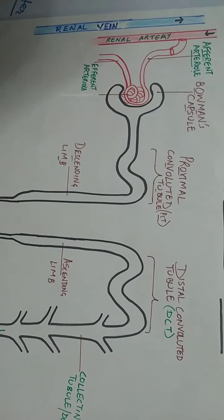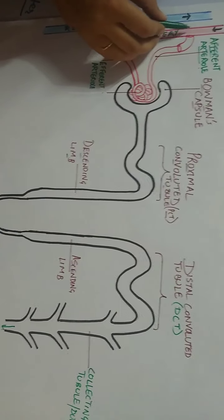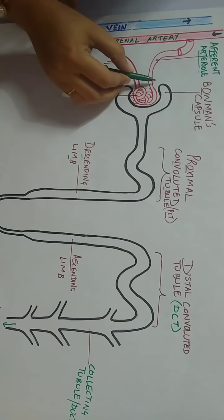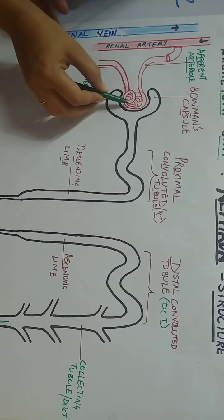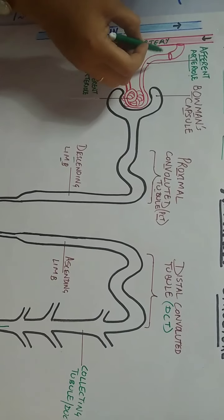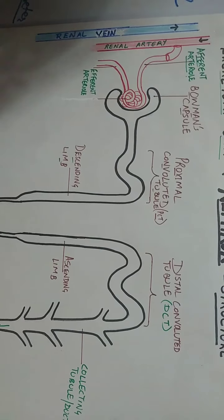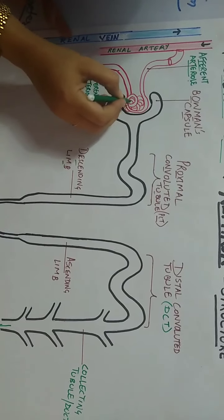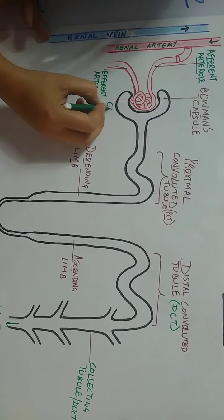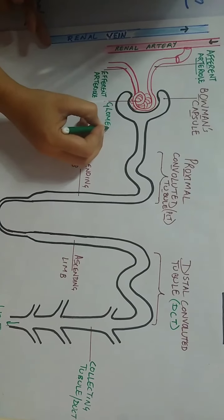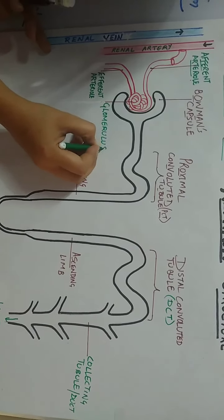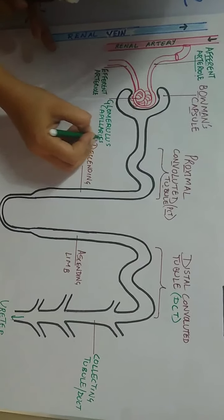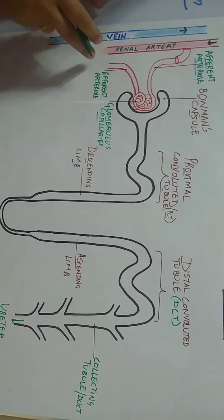These afferent arterioles arrive at the junction of each Bowman's capsule, where they form a network of capillaries named glomerulus capillaries. This is also one of the important labels of the nephron structure that you have to learn.